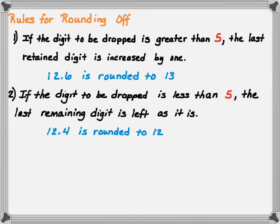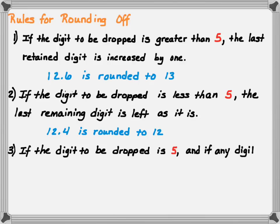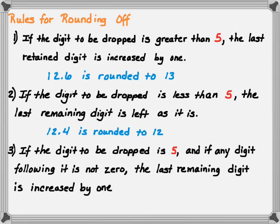To summarize the rounding rules: greater than 5, round up; less than 5, leave the digit as it is. If the digit is exactly 5 and the number following it is not zero, the last remaining digit is increased by 1. So 12.51 rounded to two significant figures: looking at the 2, the following digit is 5 with a 1 after it, so I round up to 3, giving an answer of 13. If it equals 5 and the number following the 5 is not zero, round up. This concludes our lesson on significant figures.